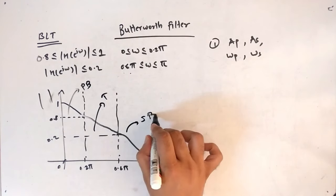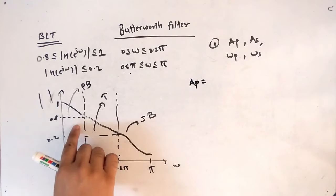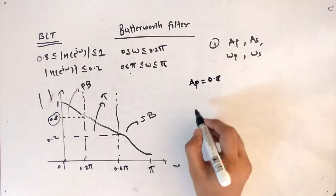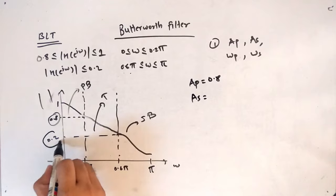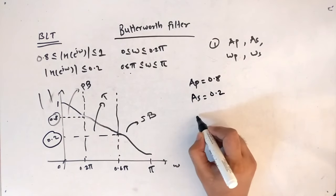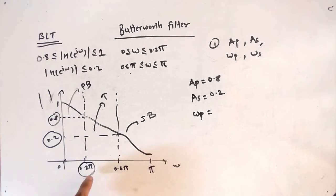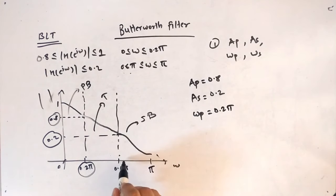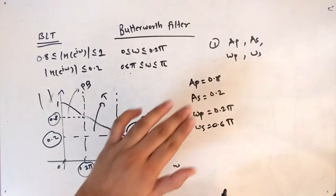Using this graph we can find the parameters. Passband attenuation Ap = 0.8, stopband attenuation As = 0.2. Passband frequency ωp = 0.2π, since that is the boundary of the passband region. Stopband frequency ωs = 0.6π, since that is where the stopband begins.